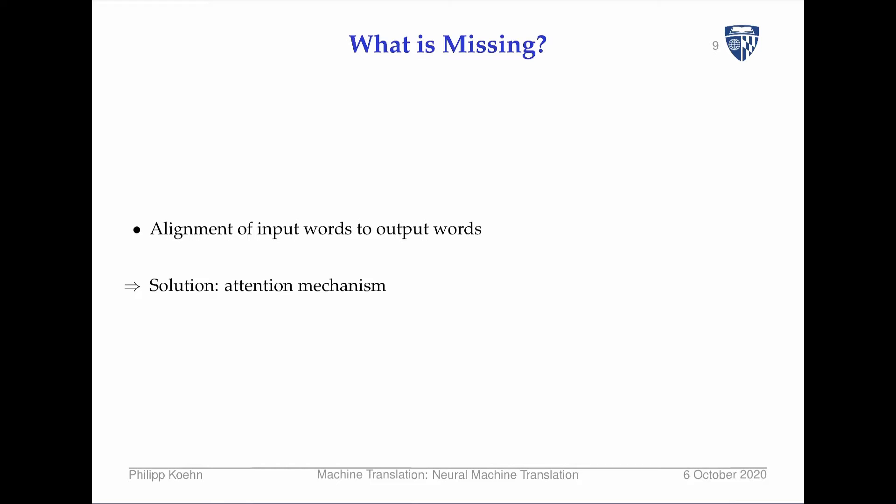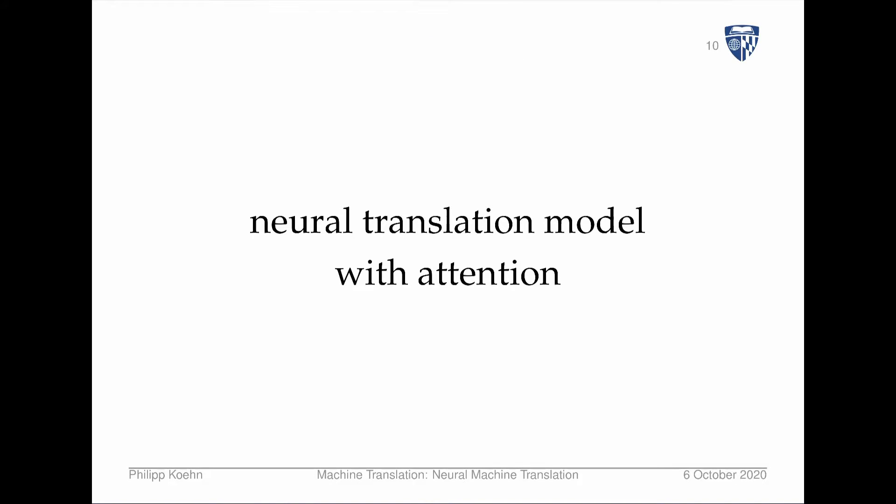This lecture is all about attentional recurrent neural network architectures for machine translation. We're going to describe a fairly complicated model, doing it slowly in parts — going over the architecture with colorful pictures but also going through the math. At the end we'll also discuss training of these models and issues with batching and deeper models. The model we'll discuss today is a neural translation model with attention.